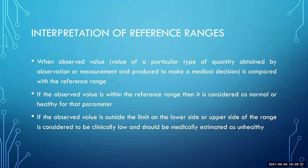If the value is outside the limit — either below 90 on the lower side or above 110 on the upper side — it is considered clinically low or clinically high and should be medically estimated as unhealthy. So the words clinically low and clinically high are very important. Medical estimation is given as unhealthy and there should be supporting data to confirm the patient is actually unhealthy. With that, we are at the end of the session.